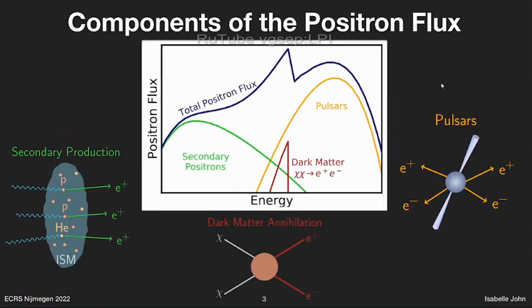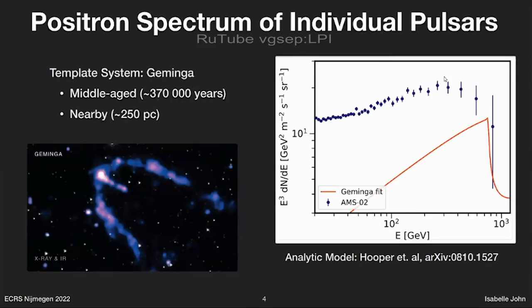There are different components to the positron flux. At low energies, we have the contribution from secondary positrons — positrons produced in interactions of other particles with the interstellar medium. At higher energies, where we have this positron excess, the most prominent explanation is that these positrons are produced by pulsars that rotate very rapidly and convert some of this rotational energy into electron-positron pairs. Then potentially we have a third contribution from dark matter particles that annihilate and would produce a very sharp, spiky feature at the dark matter mass.